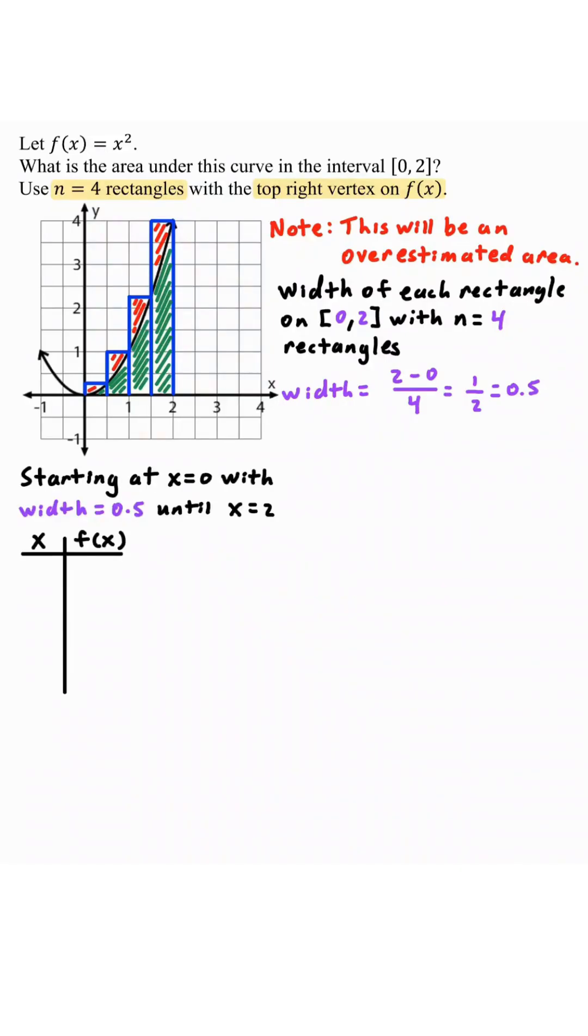Now we'll create a table of values, starting with x equals 0. With a width of 0.5, we're going to constantly add by 0.5 until we get to x equals 2. Now we're going to evaluate. Since f(x) equals x squared, we have all these corresponding f(x) values.